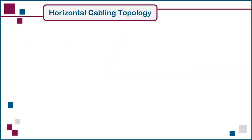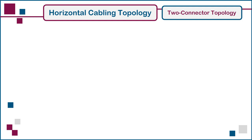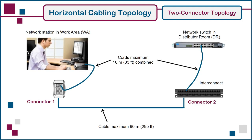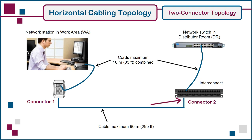Next, we'll illustrate the four possible connector combinations for end-to-end horizontal cabling, starting with the basic two-connector topology. Here's the basic channel setup, with two connection points, one at each end. Note the use of the term interconnect in the DR on the right, which indicates a single connecting point for both the horizontal cable and the connection to the network equipment — in this case, an equipment cord plugged into a patch panel port at one end, and a switch port at the other end.